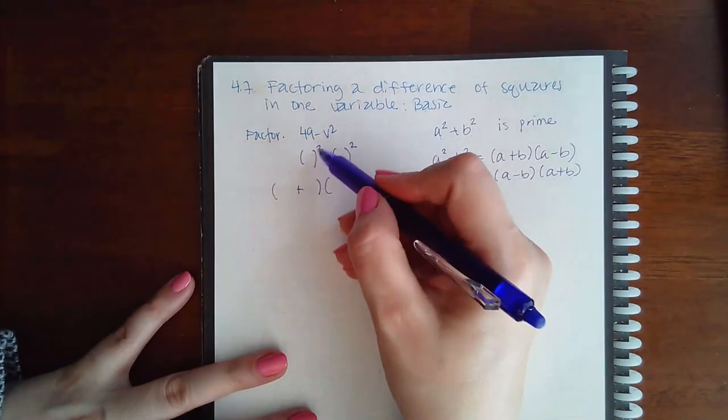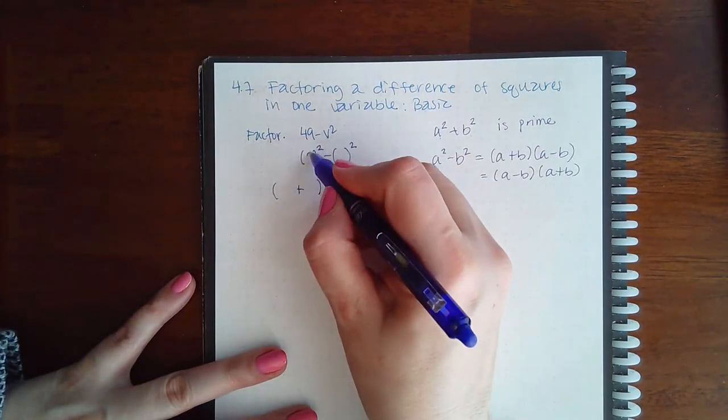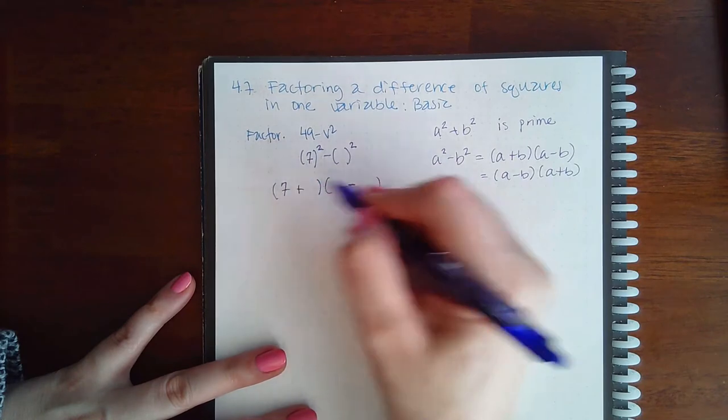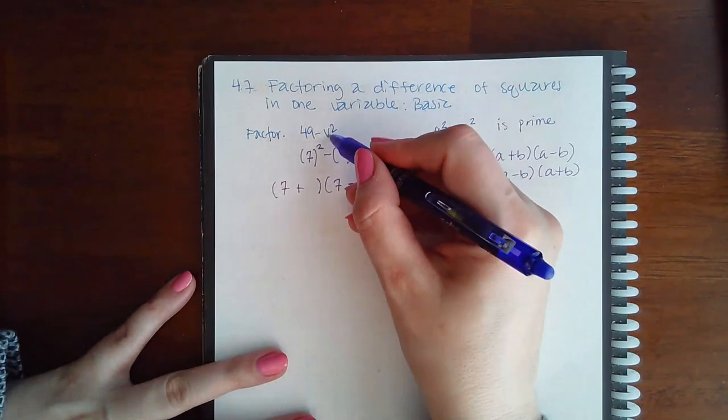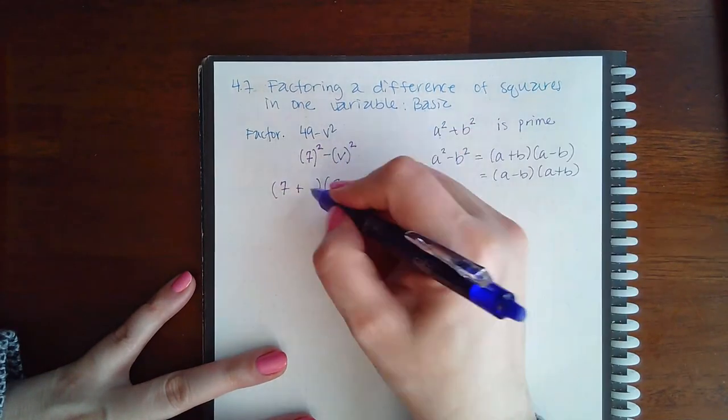And so what squared gives me 49? That would be a 7, so I'm going to put 7 in the front of each of those parentheses. And then what squared gives me v squared? That would be v, so put a v in the back of each of those parentheses.